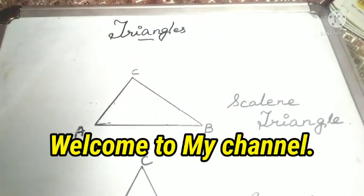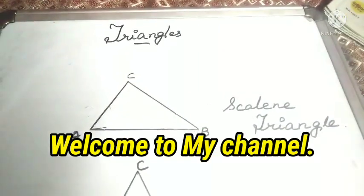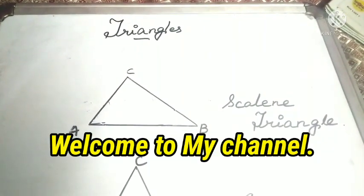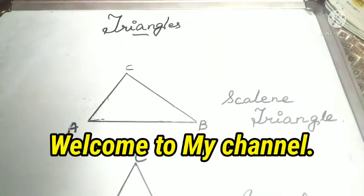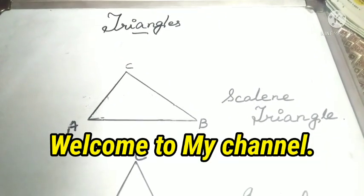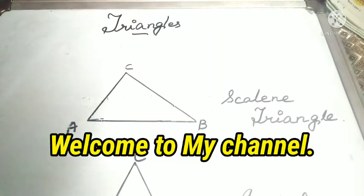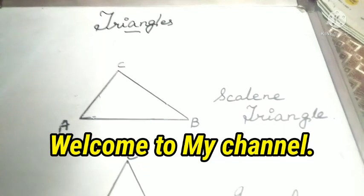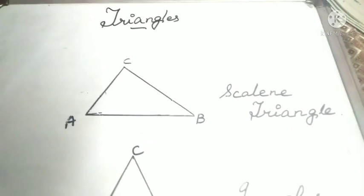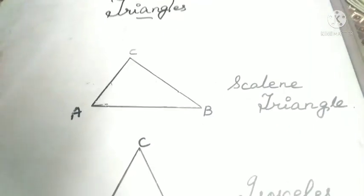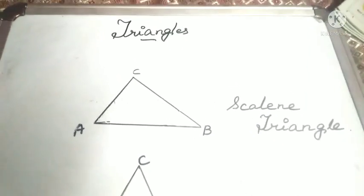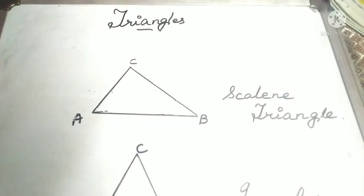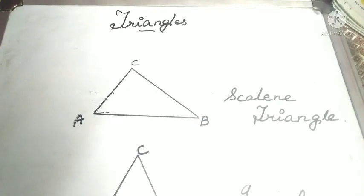Hello friends, welcome again to a grand new video on triangles. Today I'm going to teach you the types of triangles. So what is a triangle? A closed figure enclosed by three line segments is known as a triangle.